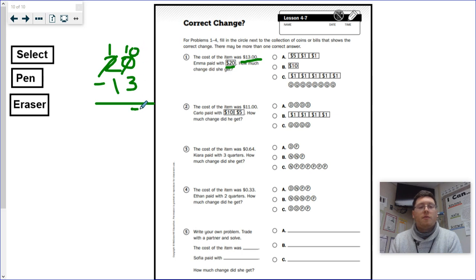So I subtract that. 10 minus 3 is 7. 1 minus 1 is 0. So I'm going to get $7 back in change.